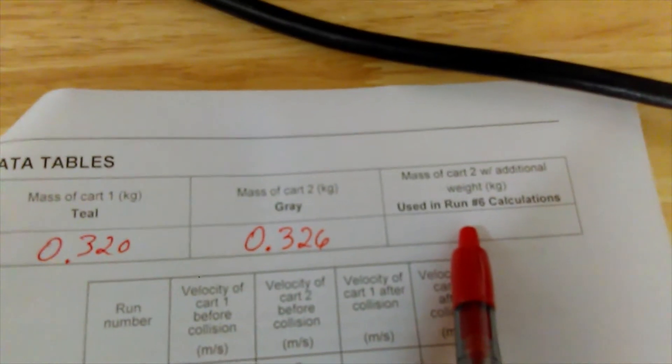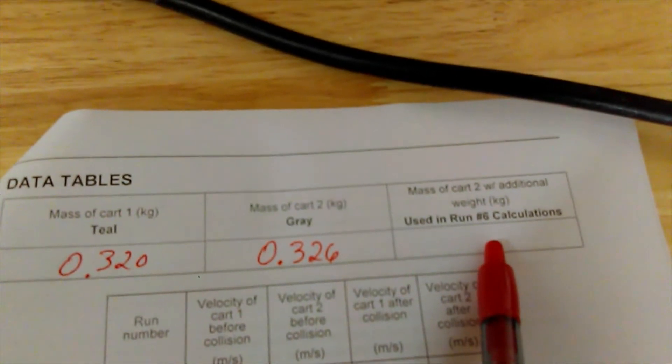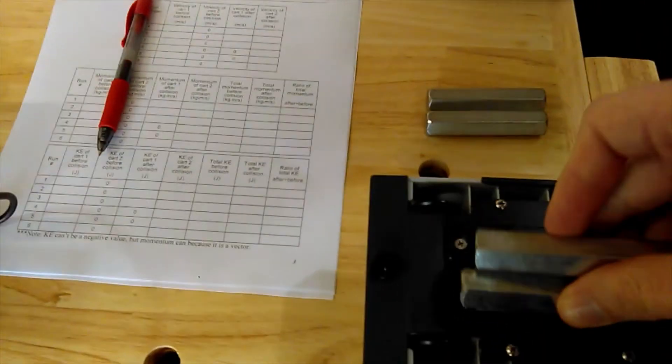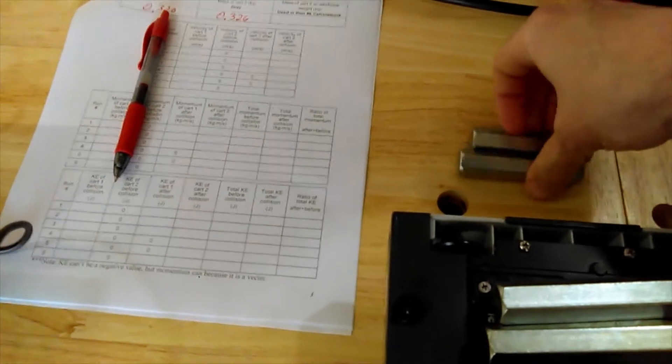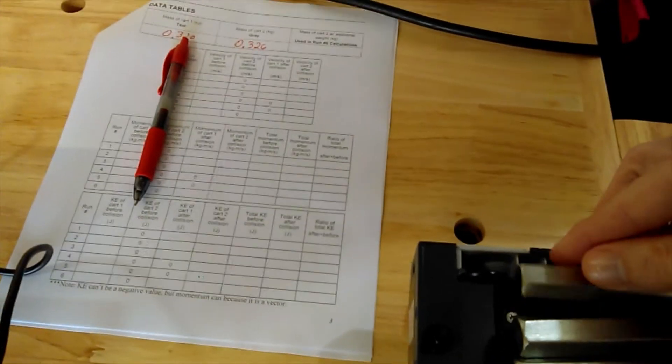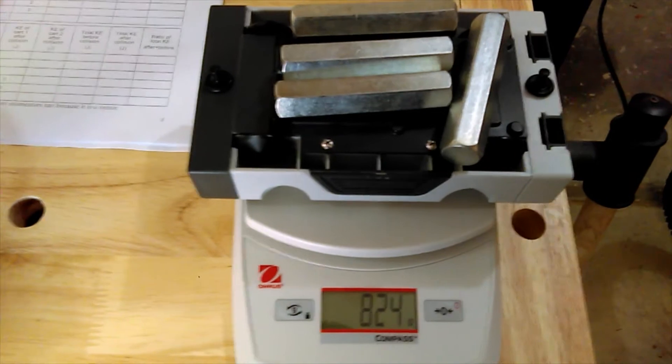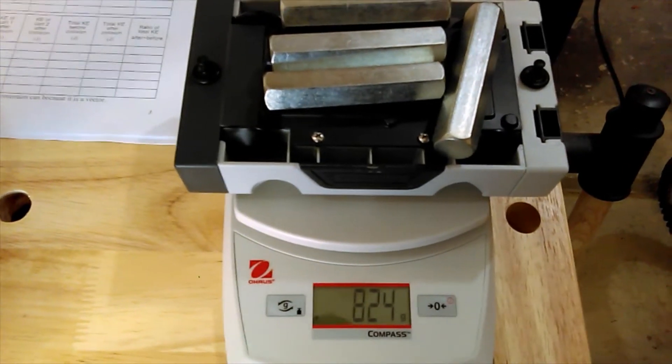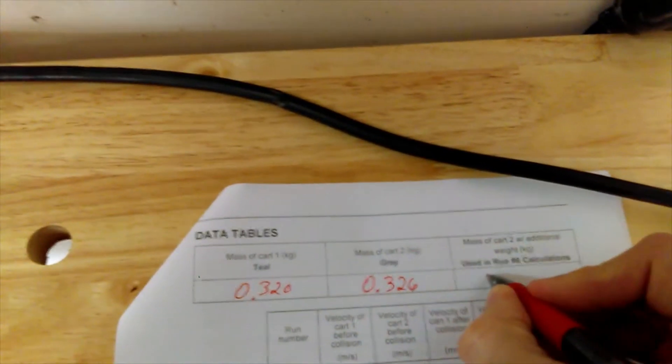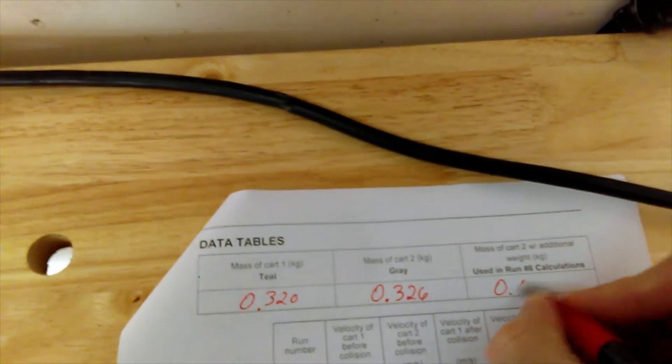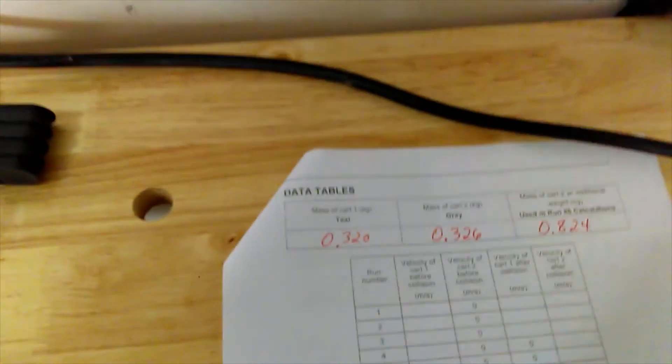Notice when we do run number six, we're going to make car two more massive using these extra masses. I'm going to stack them on top so we can get this total mass, 824 grams. It's important that you only use this number when talking about cart two in trial six, so we'll record 0.824 kilograms.